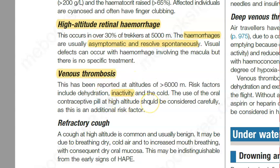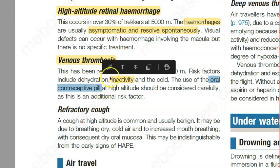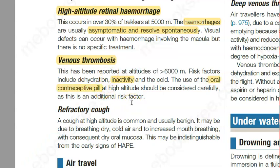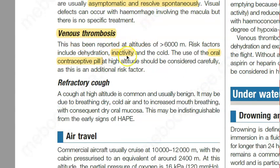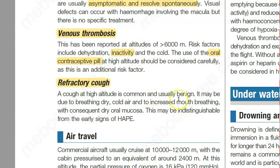This clotting in the vein can lead to emboli. Oral contraceptive pills — if you are using them at high altitude, you should be very careful as they are an additional risk factor for venous thrombosis. So if you are a hiker climbing mountains, check about your oral contraceptive pills. As a doctor, check if your patients are doing mountaineering. Then there is refractory cough — cough at high altitude is common and it is benign.